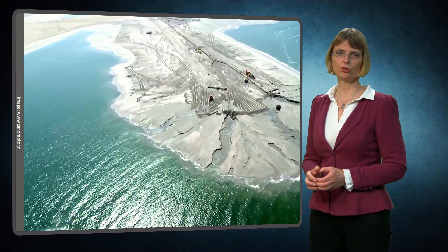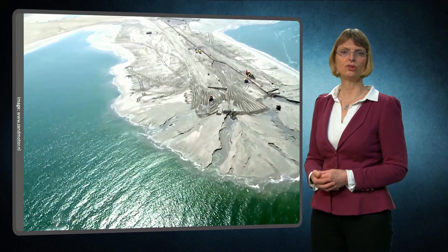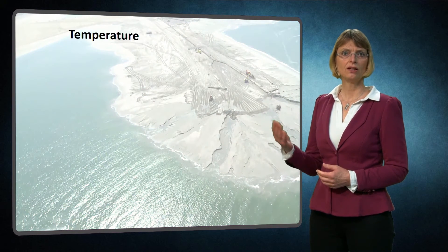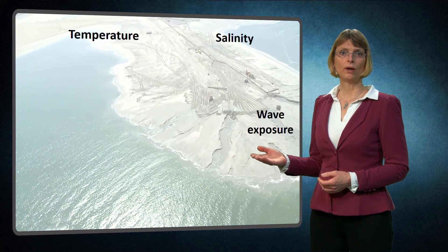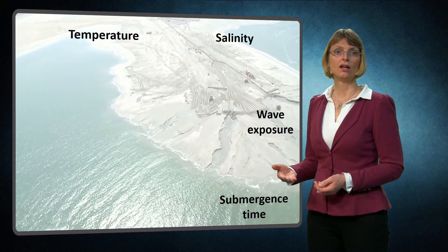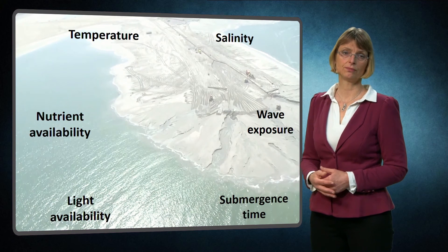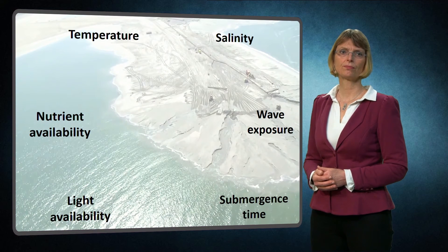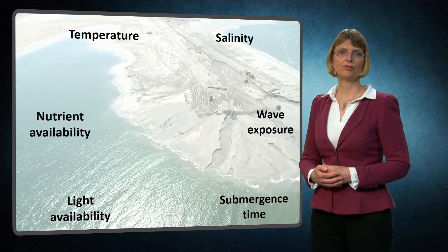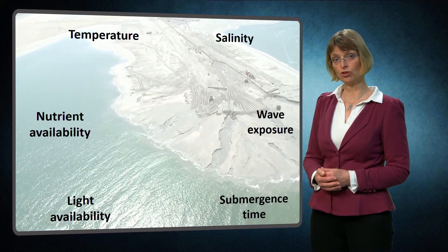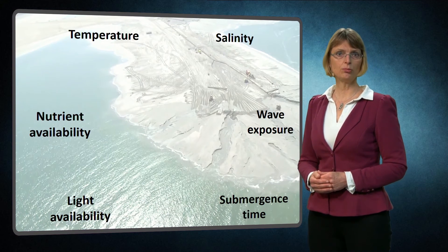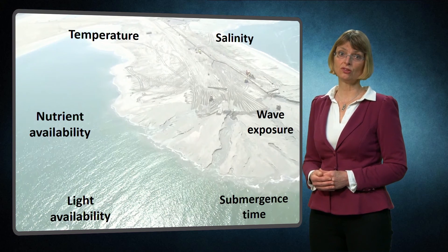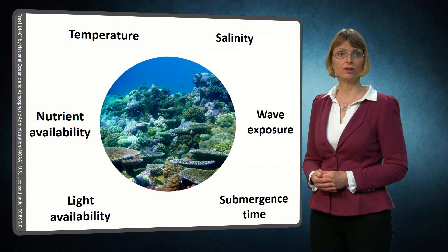We have distinguished six abiotic factors that determine the abiotic boundary conditions for ecosystem development in coastal and riverine areas: temperature, salinity, wave exposure, submergence time, light availability and nutrient availability. These factors can vary greatly over different seasons. In particular, temperature and the availability of light and nutrients can vary from summer to winter. The six abiotic factors and their seasonal variations primarily determine which species are able to survive at a specific locality.